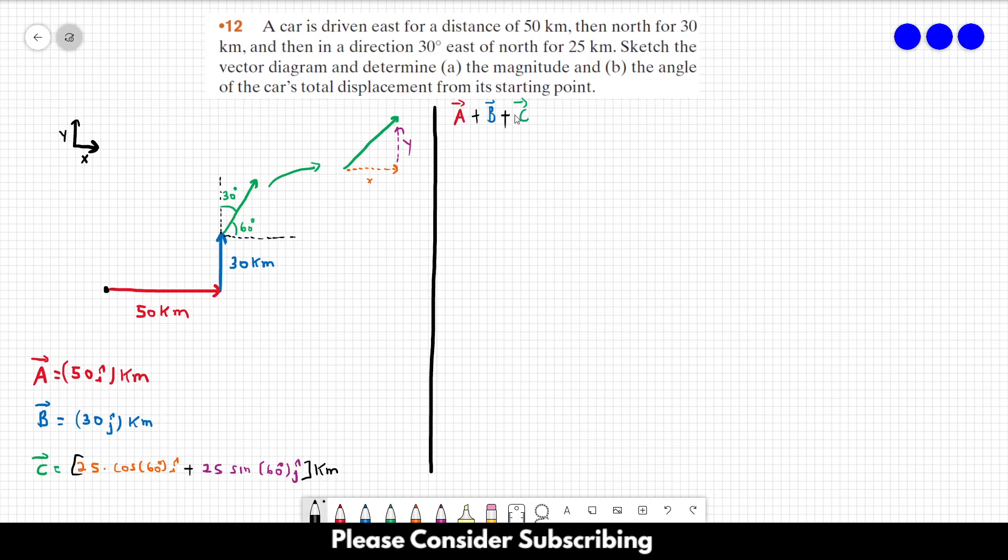So we have to sum the three vectors. And I guess it's easier if we just replace vector C by numbers, I guess, or not. Well, we can do everything at once. So we can sum.